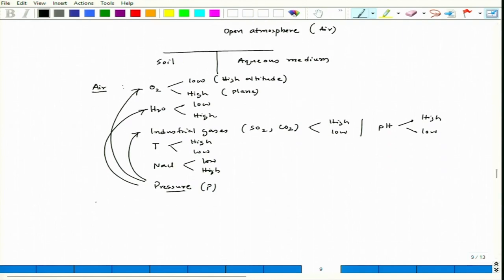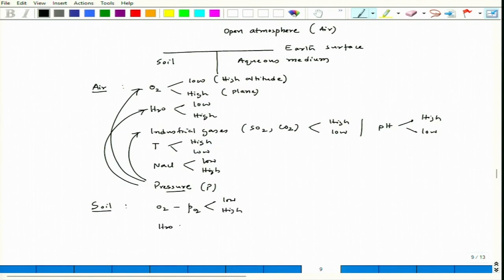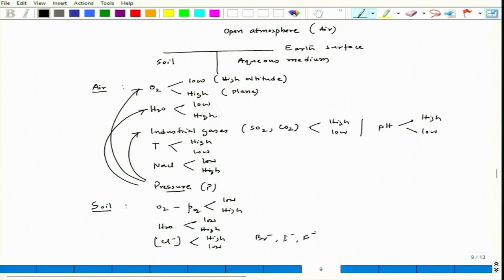Now let us think of soil — that means below the earth surface. In soil, oxygen can again have low or high partial pressure. Moisture could be low or it could be high. Then there is presence of chloride ions — it could be high or it could be low. And it is not only chloride ions; there could be presence of several halides like bromide, iodide, or fluoride.